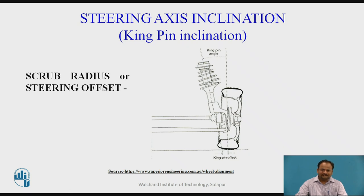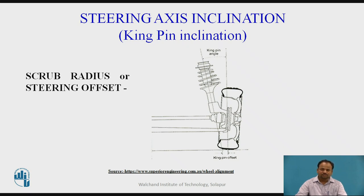If the steering axis intersects the road surface inside the tire centerline, the scrub radius is positive. If that intersection point is outside the centerline of the tire, it is negative. Zero scrub radius means the steering axis and tire axis meet at the ground surface exactly. Scrub radius is not an alignment angle and usually cannot be directly measured. However, it directly affects steering stability, steering effort, and steering returnability. Rear-drive vehicles with unequal length front suspension control arms often have positive scrub radius, while front-drive vehicles with McPherson strut front suspension have negative scrub radius.